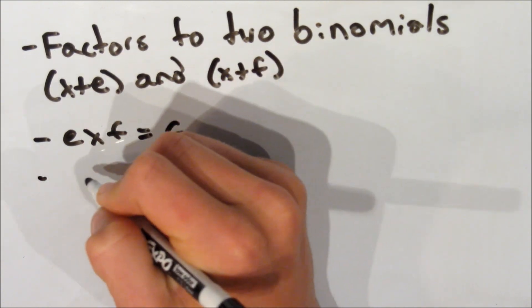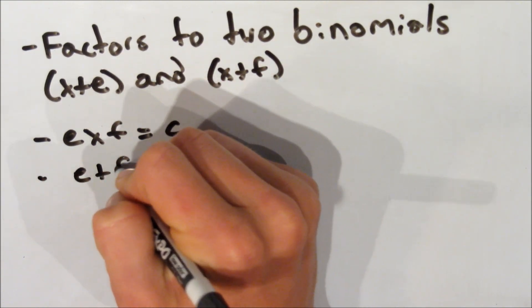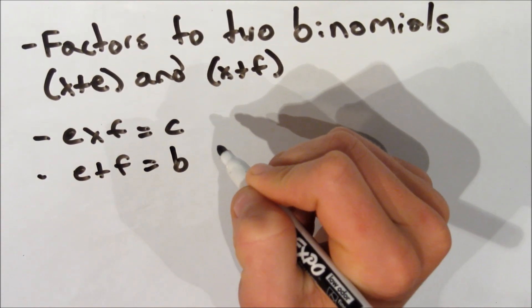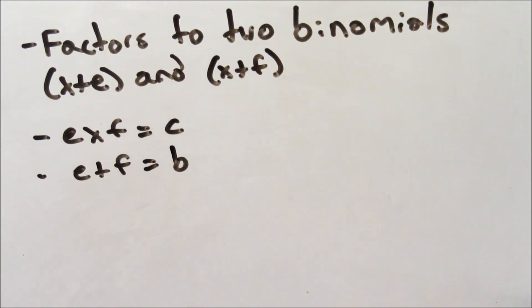So we know that e times f has to equal that c constant at the end of our quadratic function. And e plus f has to equal that b variable in our quadratic base function.